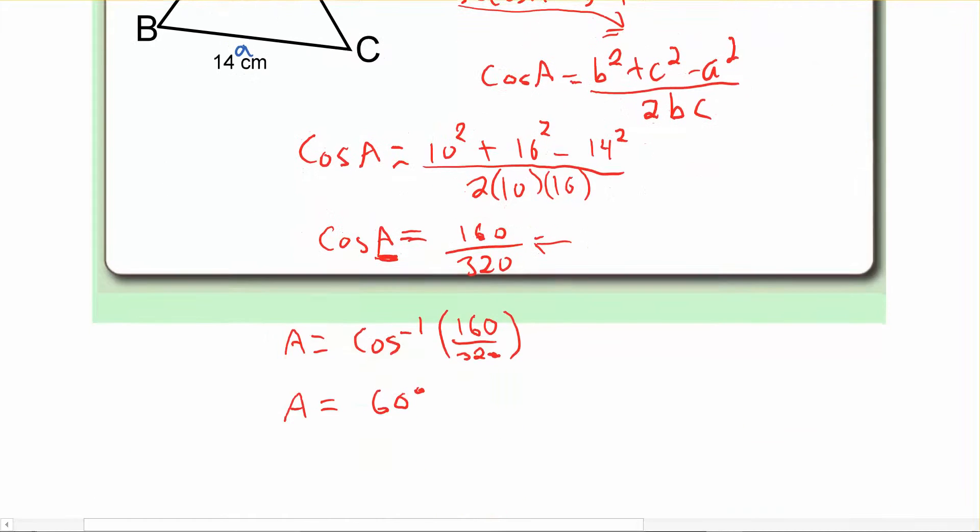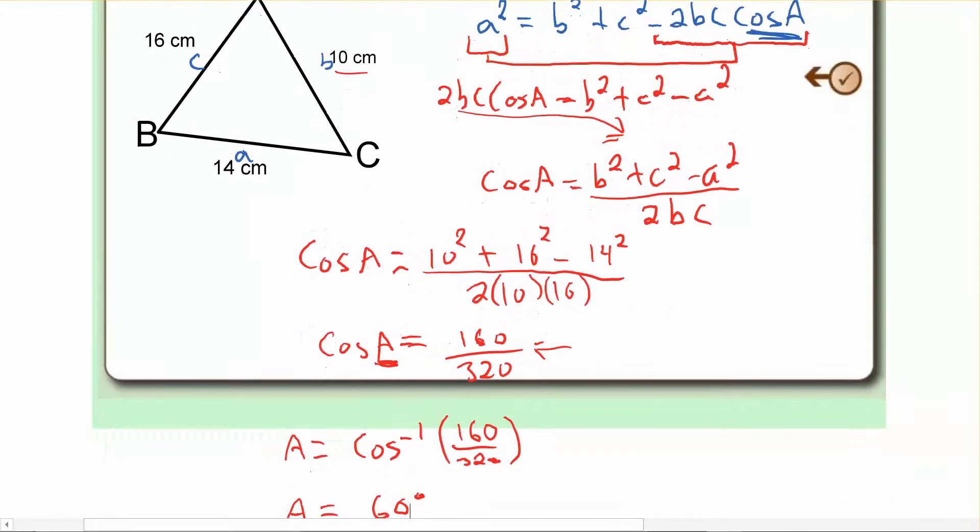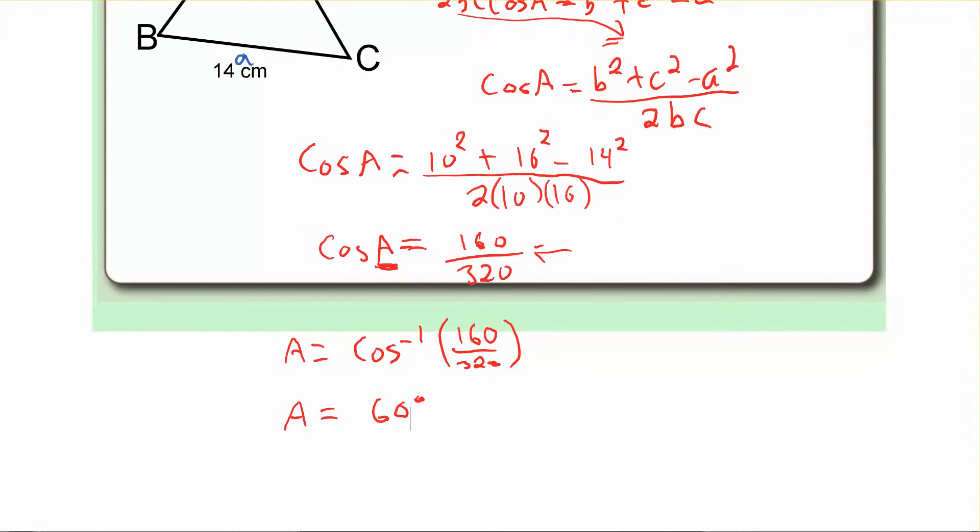And unlike the sine law, there isn't going to be an ambiguous case here. So these ones are kind of more straightforward where your answer is 60 degrees. Okay. So I'm going to end that video there. That's it for cosine law. I want to make sure that you guys go ahead and do the homework. So just make sure you go to my website and see what's underneath cosine law. And I'll see you guys in class.